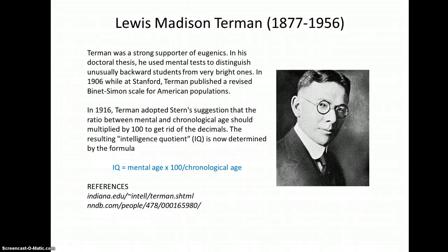If your mental age is 27 and your chronological age is 35, plugging it into this formula gives you an IQ of less than 100.